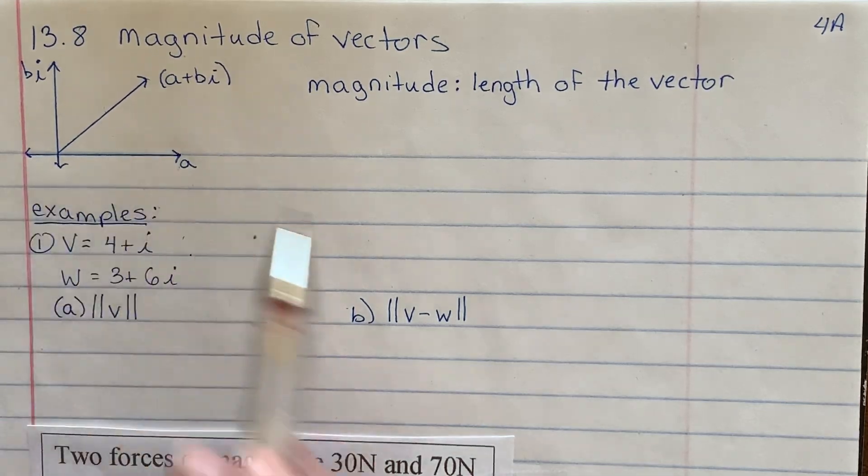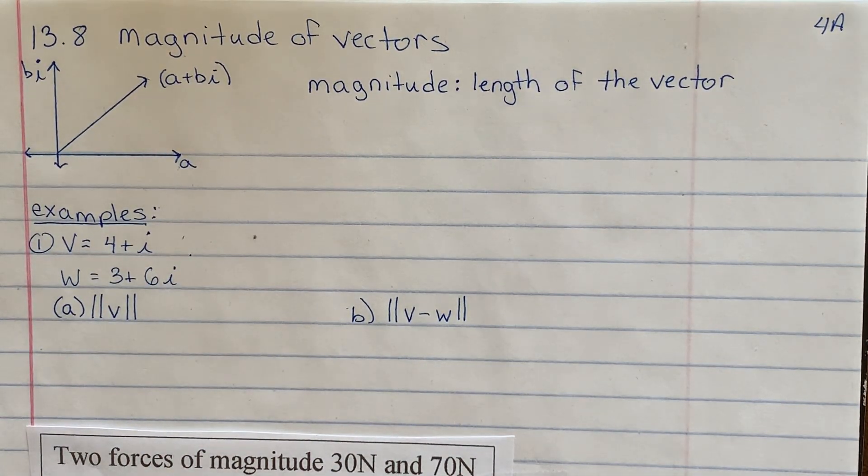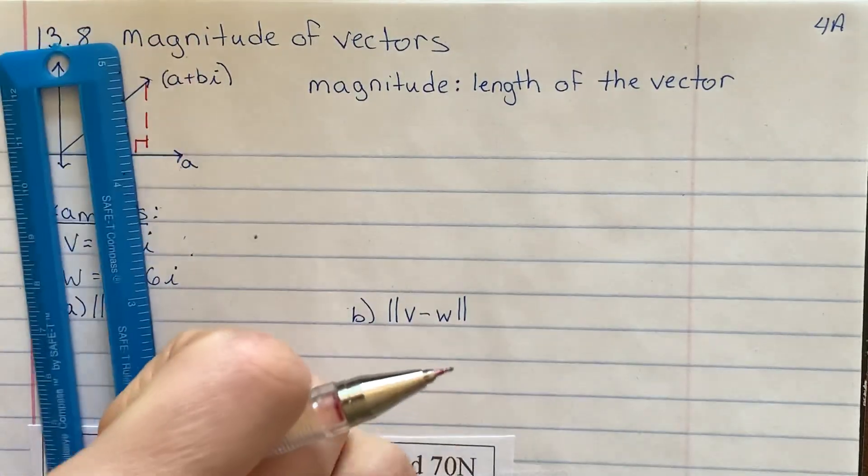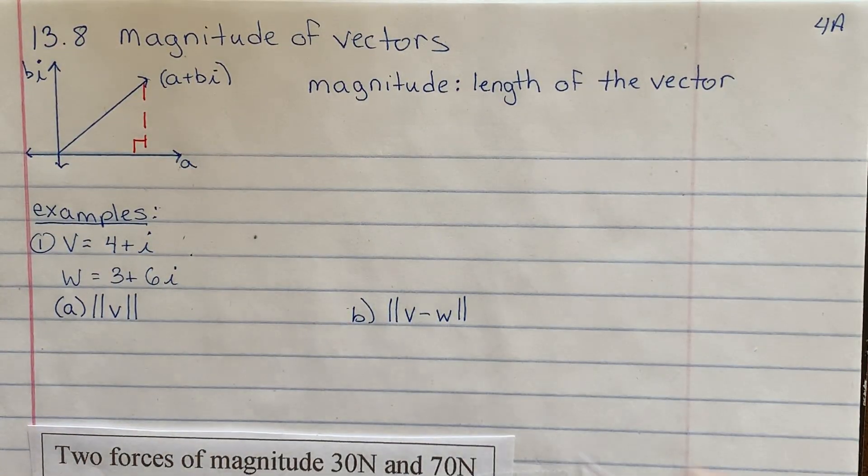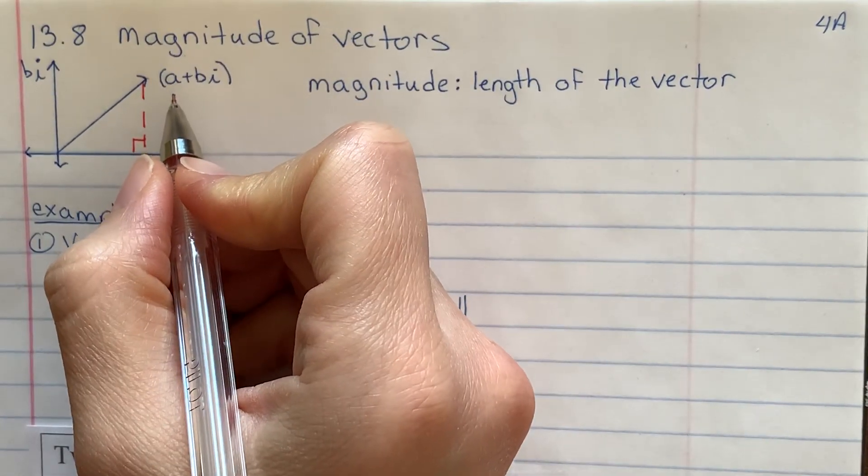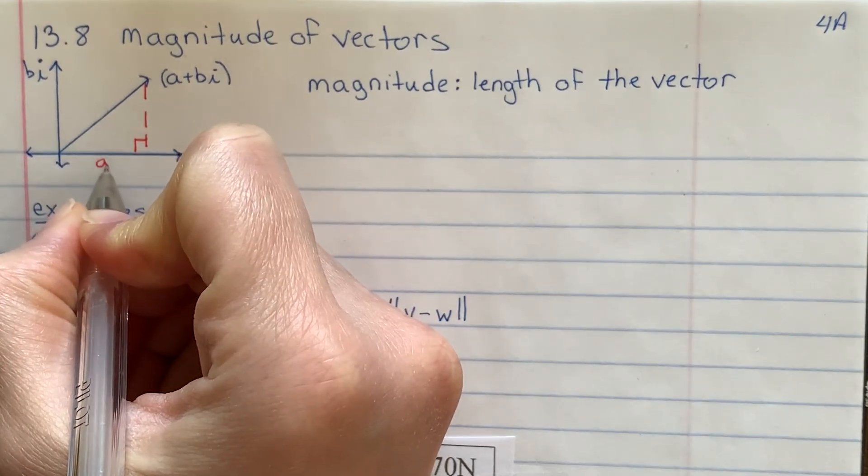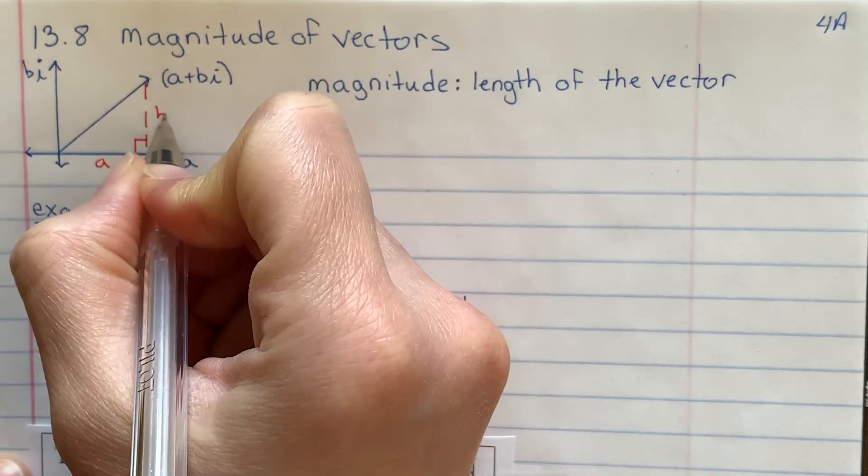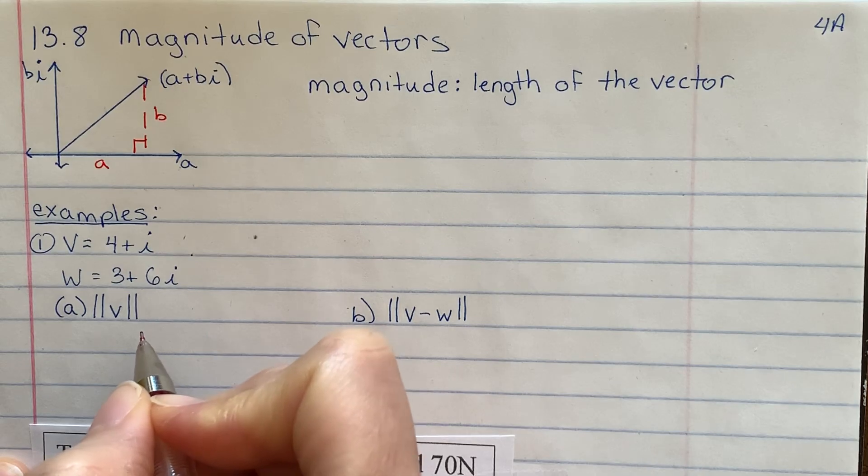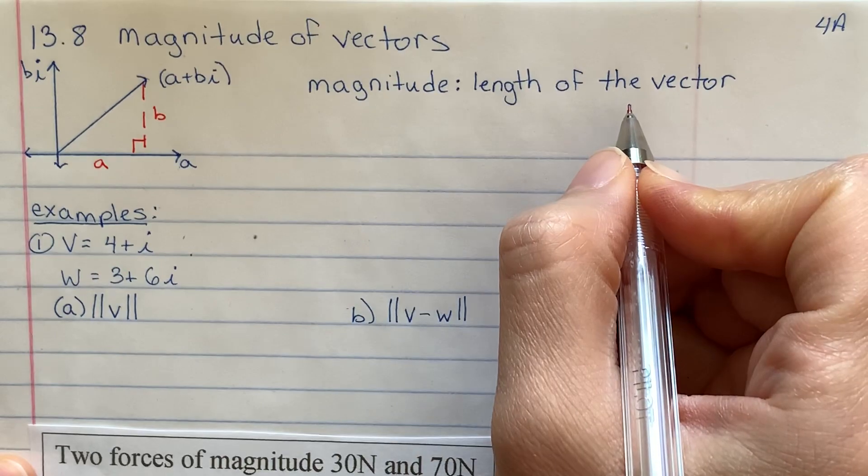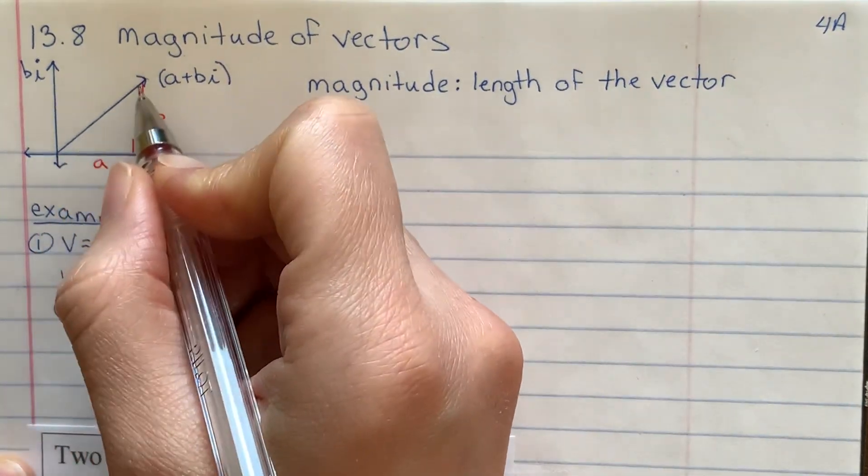I just drew a picture of a vector here, just a random vector. I'm going to go ahead and ask you to make this into a right triangle. So I'm going to add a vertical dotted line here and fill in what I know. If this is some arbitrary point or arbitrary vector, A plus Bi, I know that the horizontal distance is A, and the vertical distance is B.